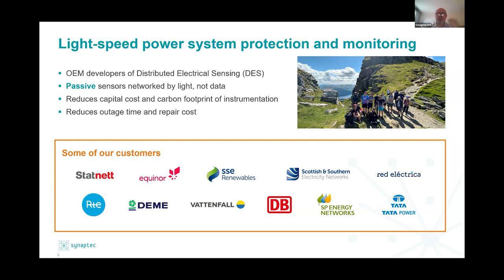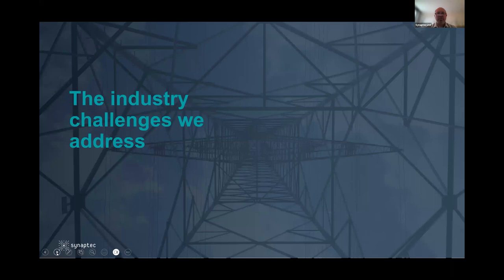Because we can reach out a long way and monitor assets without any control power, telecommunications or even data, these are passive sensors that can be deployed far away to give you information about what's happening in the power system, substantially reducing both the capital cost of instrumenting a complex power network, but also reducing the carbon footprint and operational costs. It's already used in many transmission systems around the world and also now in offshore wind.